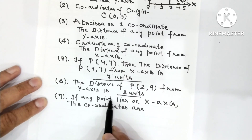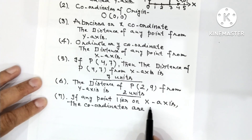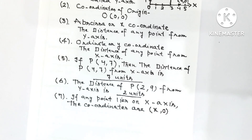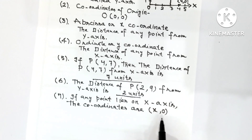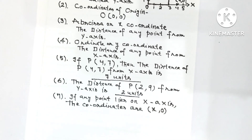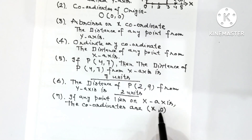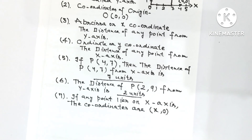If any point lies on the X-axis, then its coordinates are (x, 0). The question can also be twisted: if any point lies on the X-axis, what is the value of ordinate? The answer is 0. And if asked what is the value of abscissa, the answer is any real number — it can be rational or irrational.